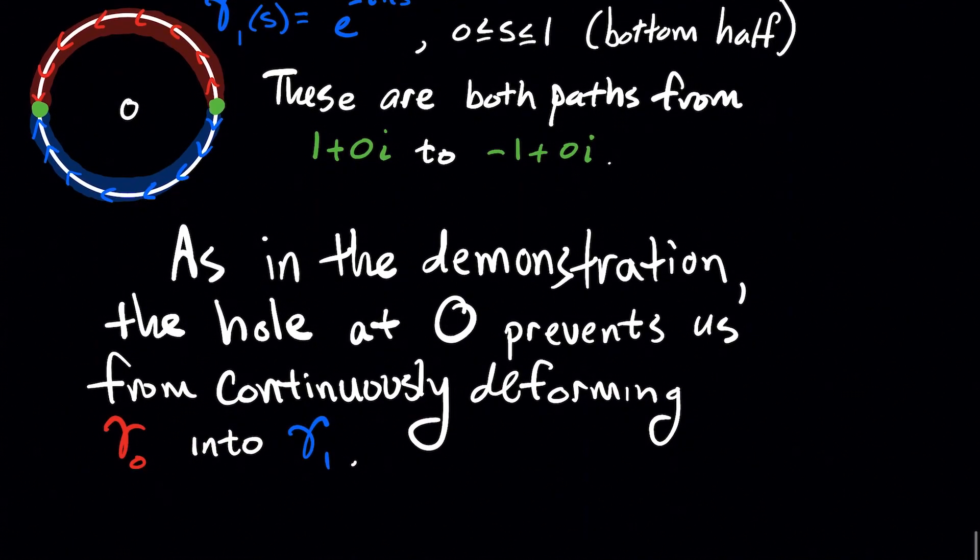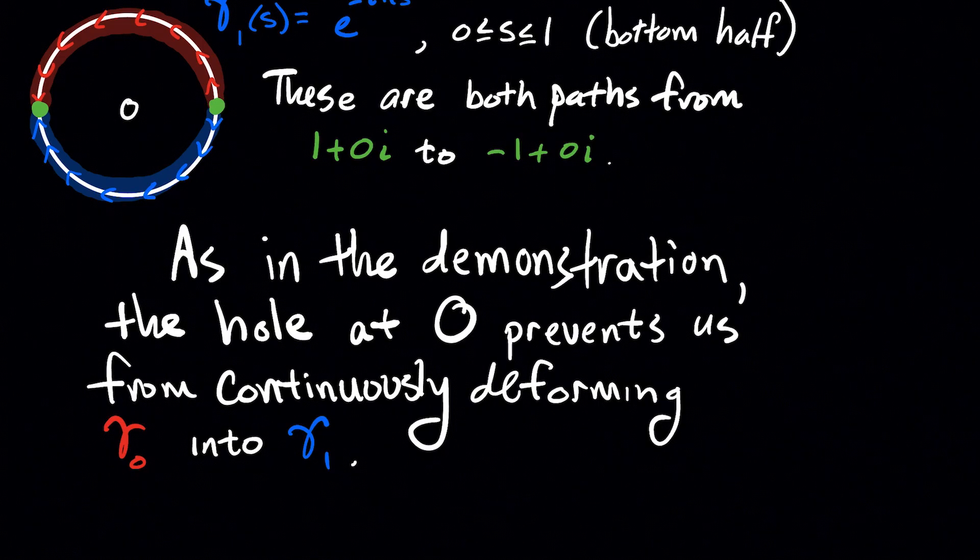And what I claim, just like in the video, the hole at the origin that I've also tried to draw in the picture, but that hole in my space that prevents us from being able to continuously deform, in this case, gamma naught, the top exponential, into gamma one, which was the bottom blue exponential.